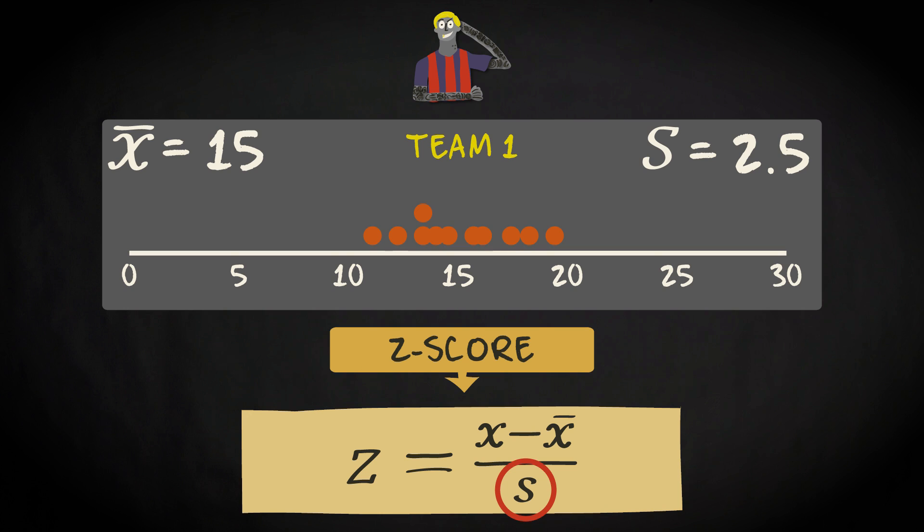Let's see what that means for a tattoo density of 10.8%. The z-score of that value is 10.8 minus 15 divided by 2.5. That equals minus 1.68. So, the z-score is minus 1.68.